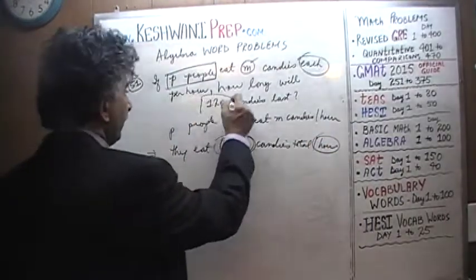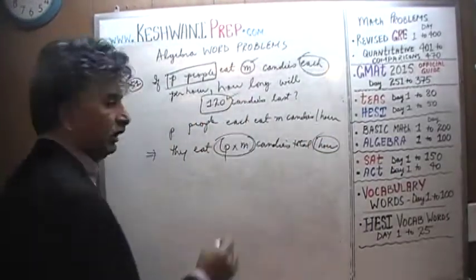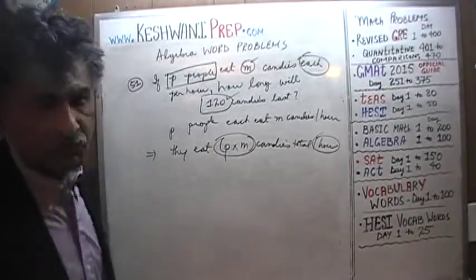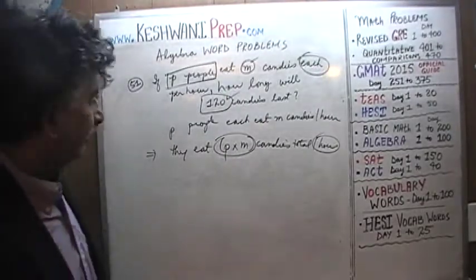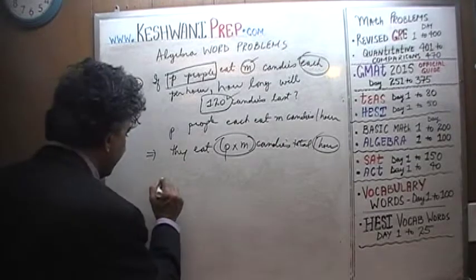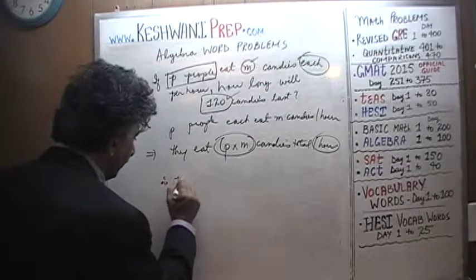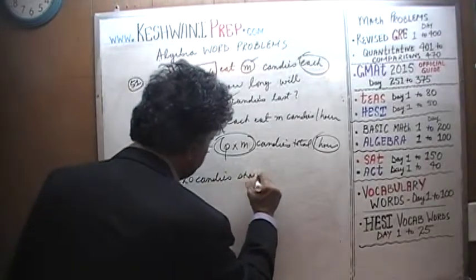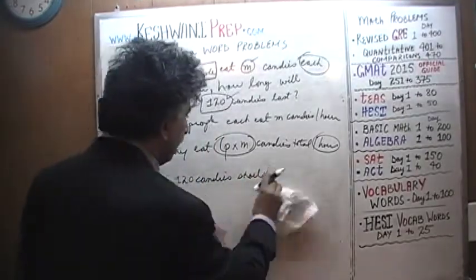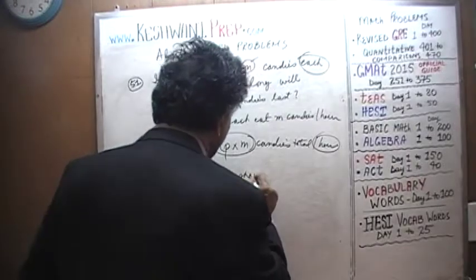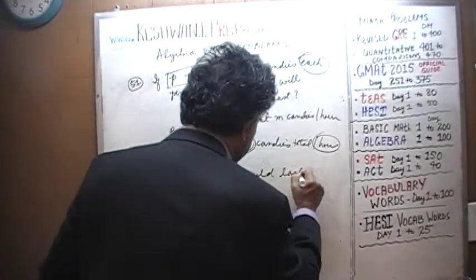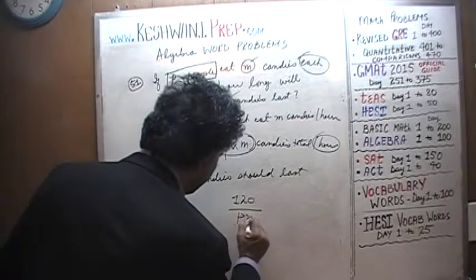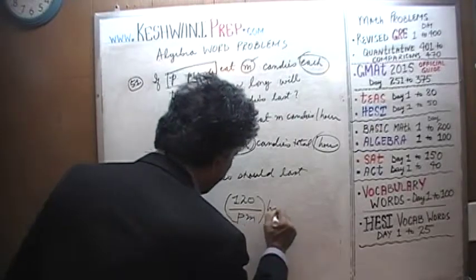So now we know how many candies we are consuming each hour. We have 120 candies. If we divide the total number of candies by how many we are eating per hour, we should have the number of hours that the candies will last.